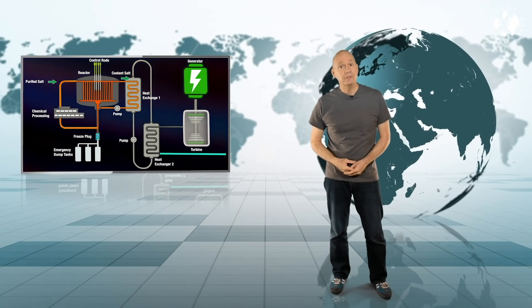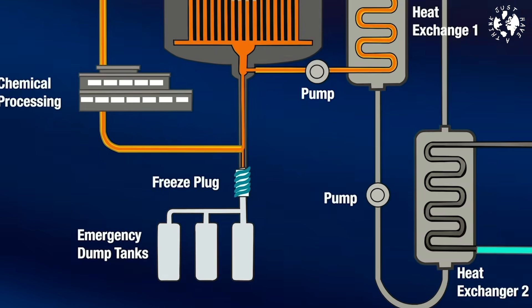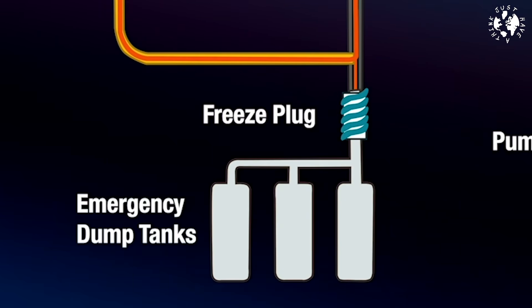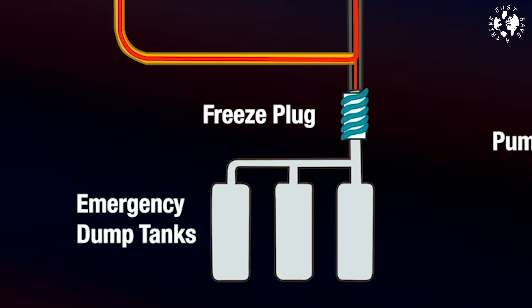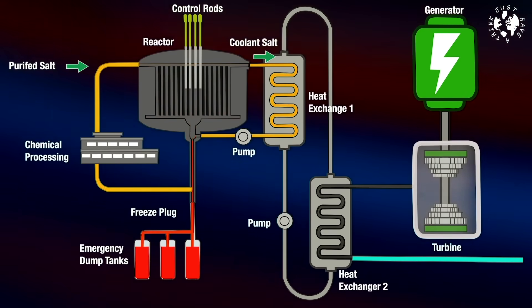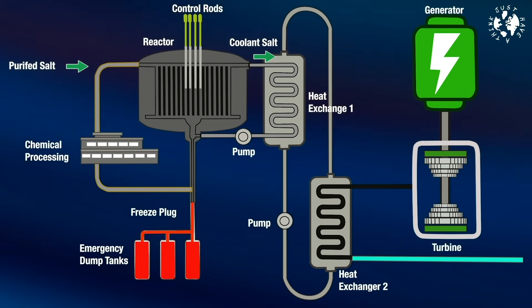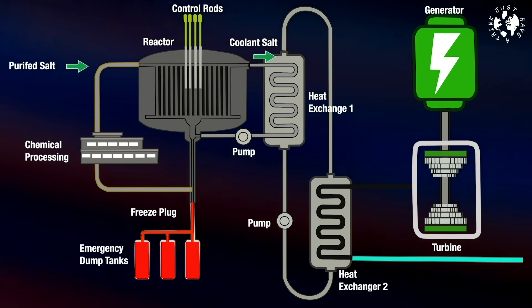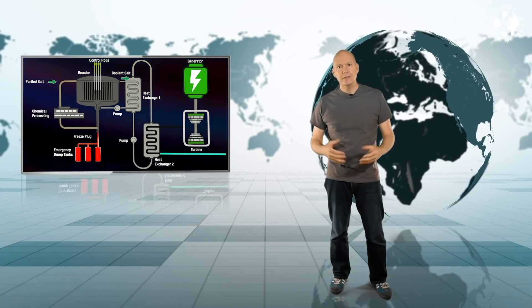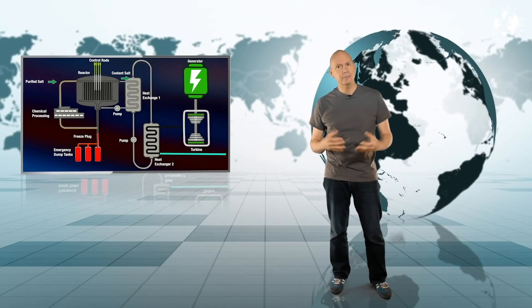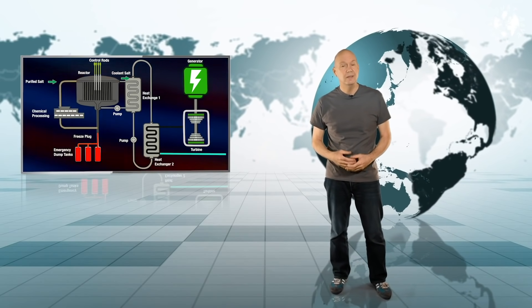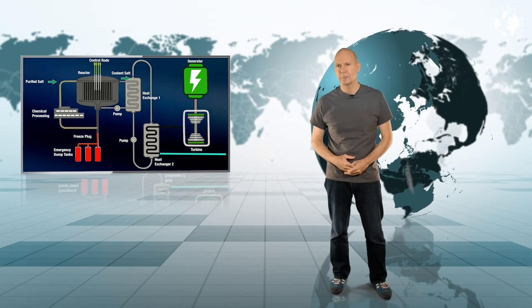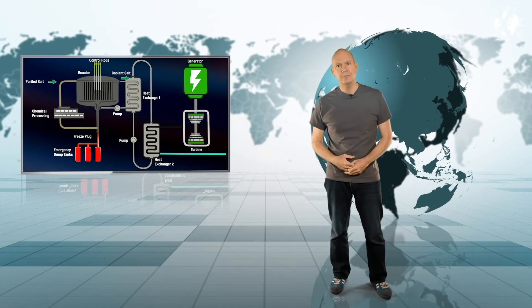But as an extra failsafe the engine is designed with a freeze plug below the reaction chamber so that if you did get an overheat situation the freeze plug just melts and the molten liquid drains out into a safe storage vat where the neutrons can't reach and again the process shuts down automatically. So in theory it's impossible to have a runaway meltdown accident and because there's no pressurised water there's no longer any risk of a hydrogen explosion from pressurised steam release.